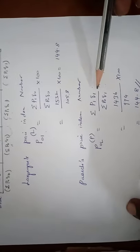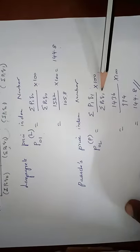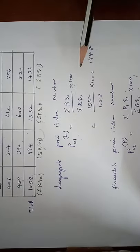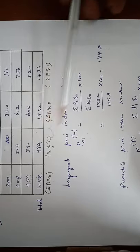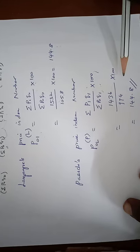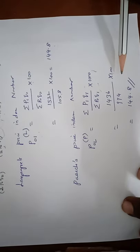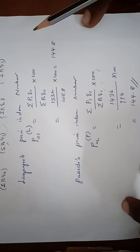Next one, so sigma P1Q1 is 1436. So sigma P0 into Q1 is 994. So 1436 by 994 into 100. The final answer is 144.8. So this is the Paasche index number.